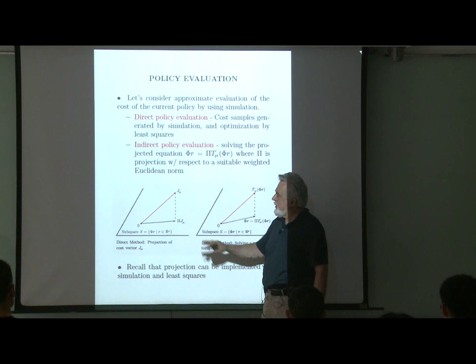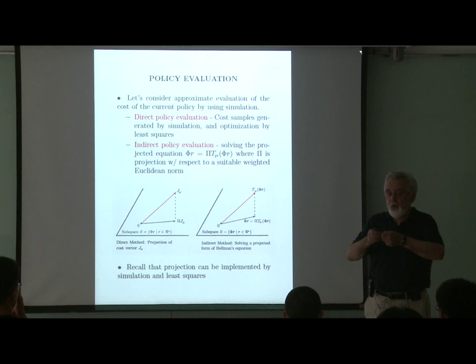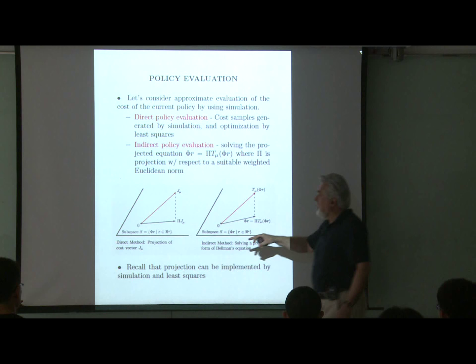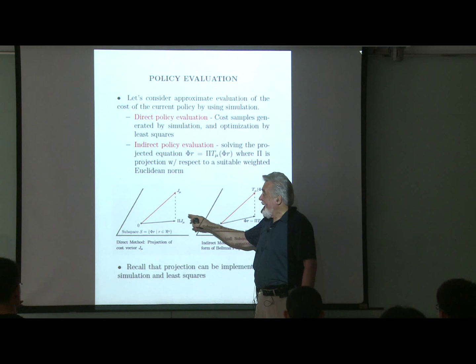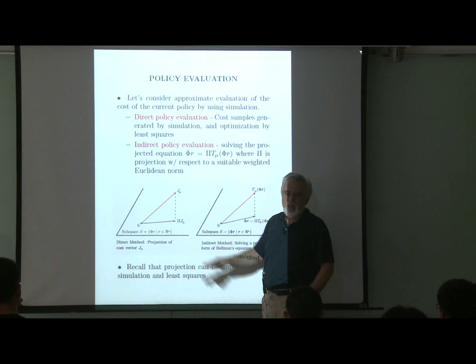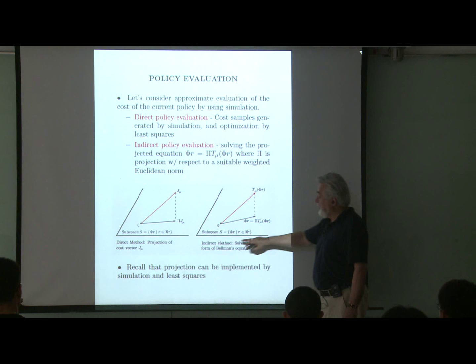To calculate samples of j_mu, you need to do simulation for a given state — you have to run the policy many times and average to obtain an approximate version of just one sample of j_mu. Then you have to do this for many states, and there is a lot of simulation noise involved in this process. When you try to use this method, you find that you need an extreme amount of simulation. So people don't use this method very much.